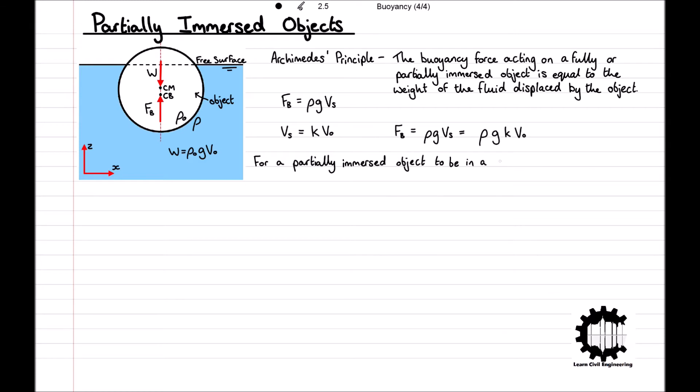For a partially immersed object to be in static equilibrium, the buoyancy force must equal the weight of the object, and these two forces, Fb and w, must have the same vertical line of action. If this last condition is not true, the object will be subject to turning moments, which could result in the object rotating or flipping. This is the reason we sometimes see icebergs flipping after some of the ice has melted or broken off.